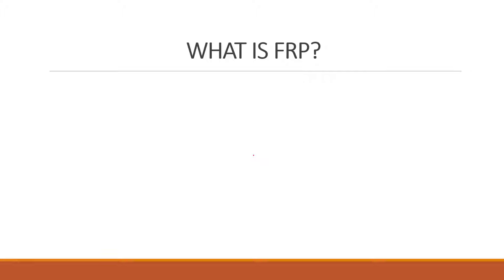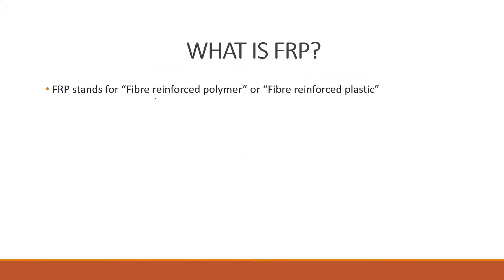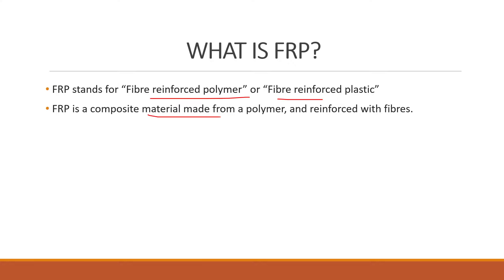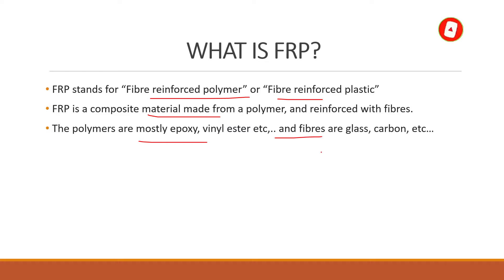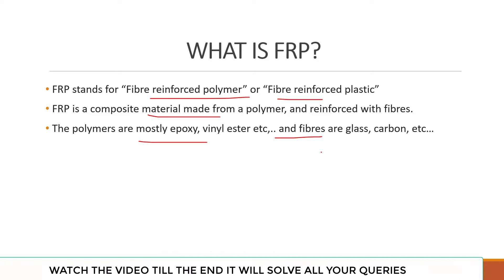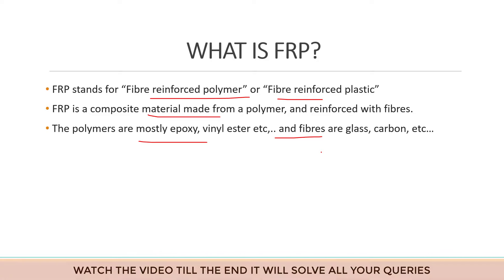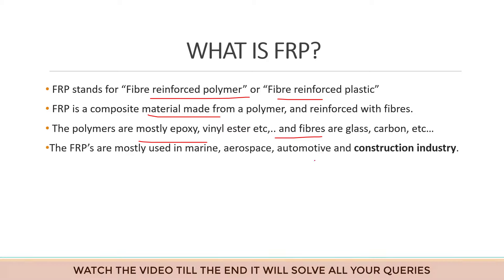So what is FRP? FRP stands for fiber reinforced polymer or fiber reinforced plastic. FRP is a composite material made from a polymer and reinforced with fibers. The polymers are mostly epoxy, vinyl ester, etc., and the fibers are glass, carbon, etc. These polymers and fibers are combined together to form FRP.